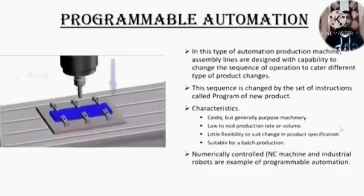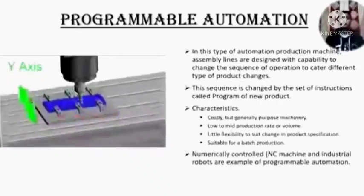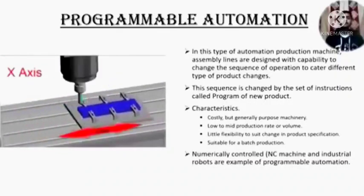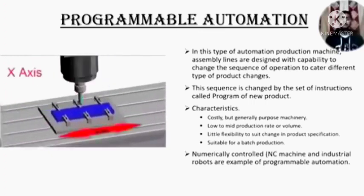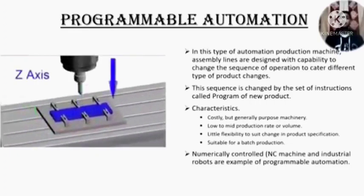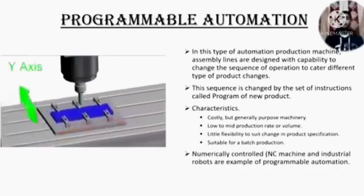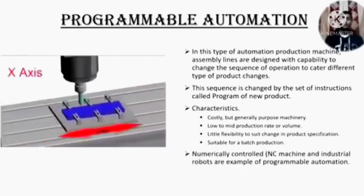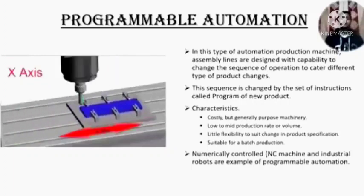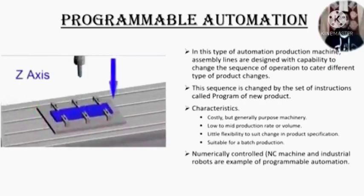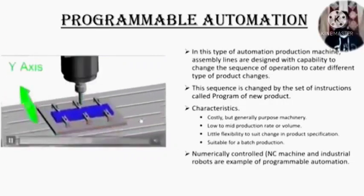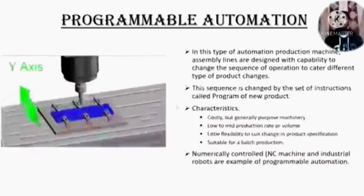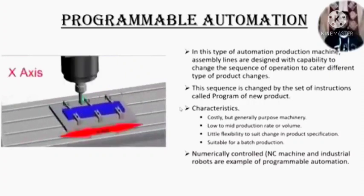The next one is programmable automation. In this type of automation, production machines and assembly lines are designed with the capability to change the sequence of operations to cater to different types of product changes. This sequence is changed by a set of instructions called the program for the new product. Characteristics: it is costly but generally uses general-purpose machinery; it is of low to mid production rate or volume; little flexibility to accommodate changes in product specification. It is suitable for batch production. NC machines and industrial robots are examples of programmable automation. In this animation, we can easily see that we give commands in the form of programs to the machine tool and it works accordingly.